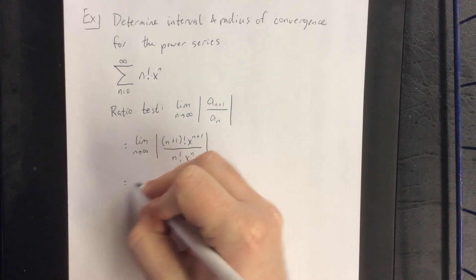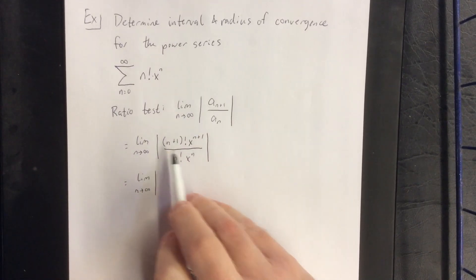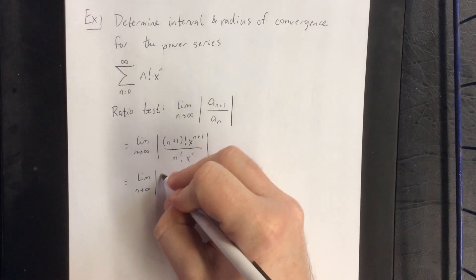Alright, grouping things together that appear as though they belong together, we can expand the n plus 1 factorial by one term.